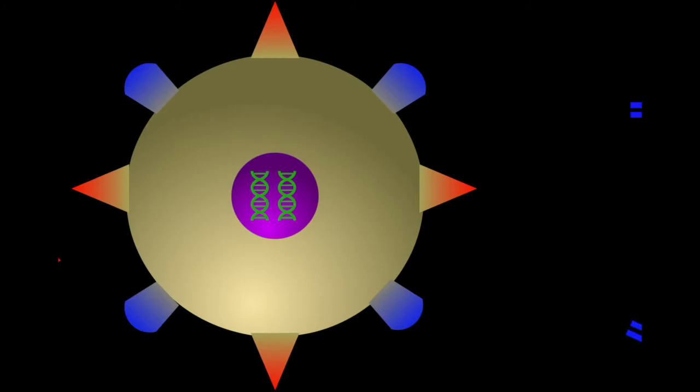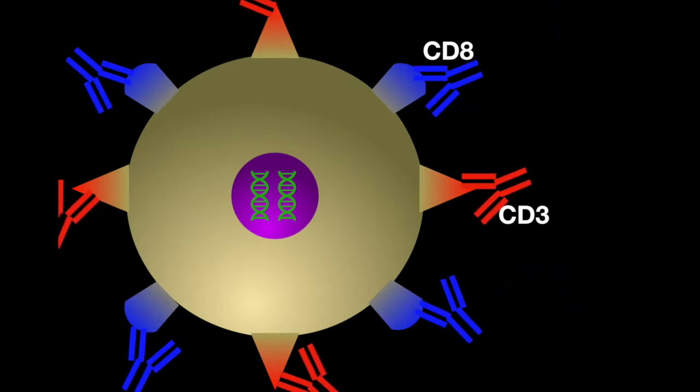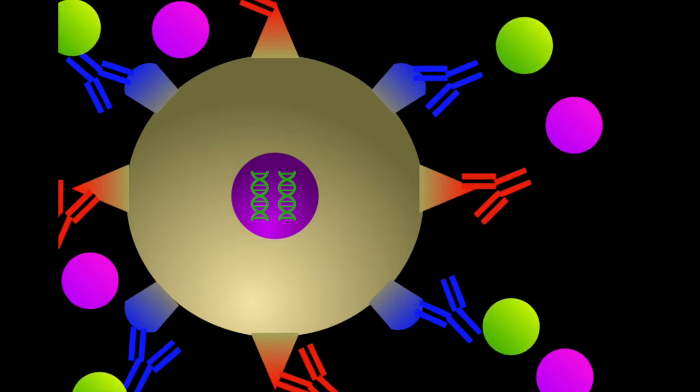First, cells are introduced to antibodies that bind specific surface components, for example, CD3 and CD8, which are expressed on T-cells. Then, a label is added that will bind specific antibodies.